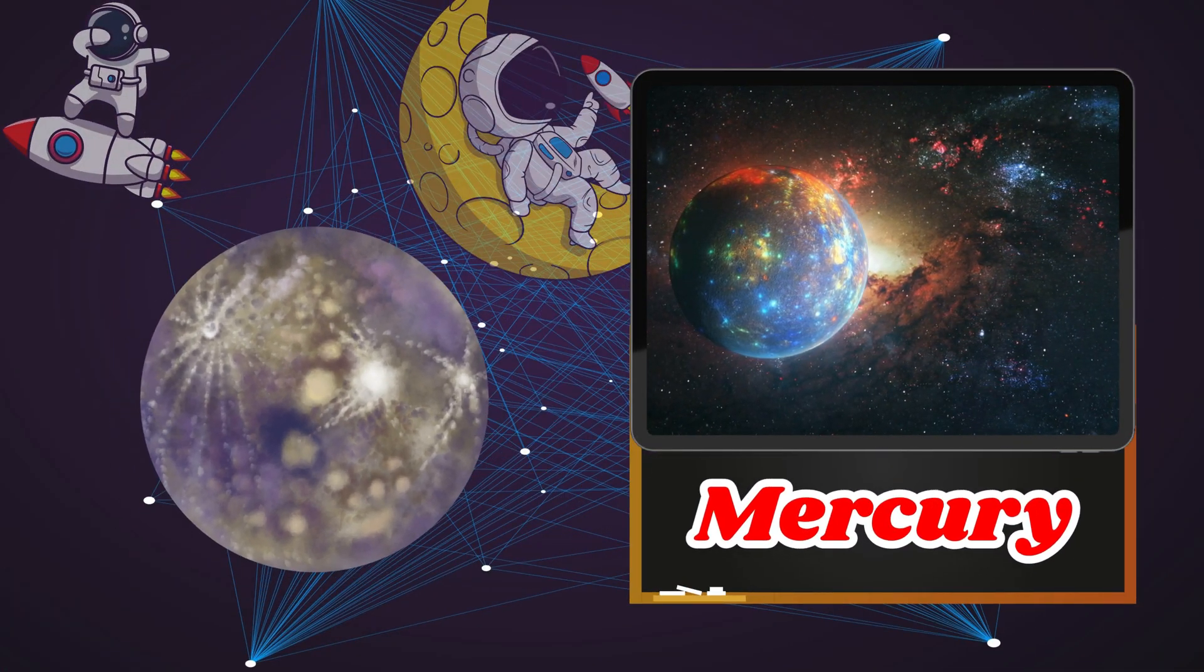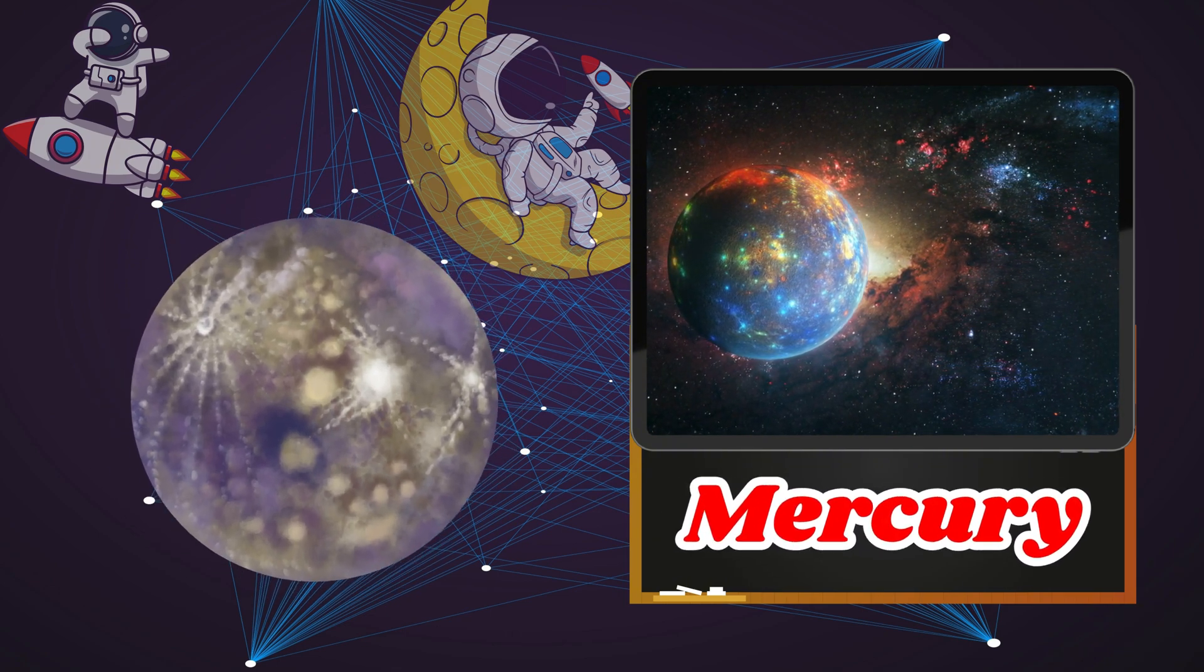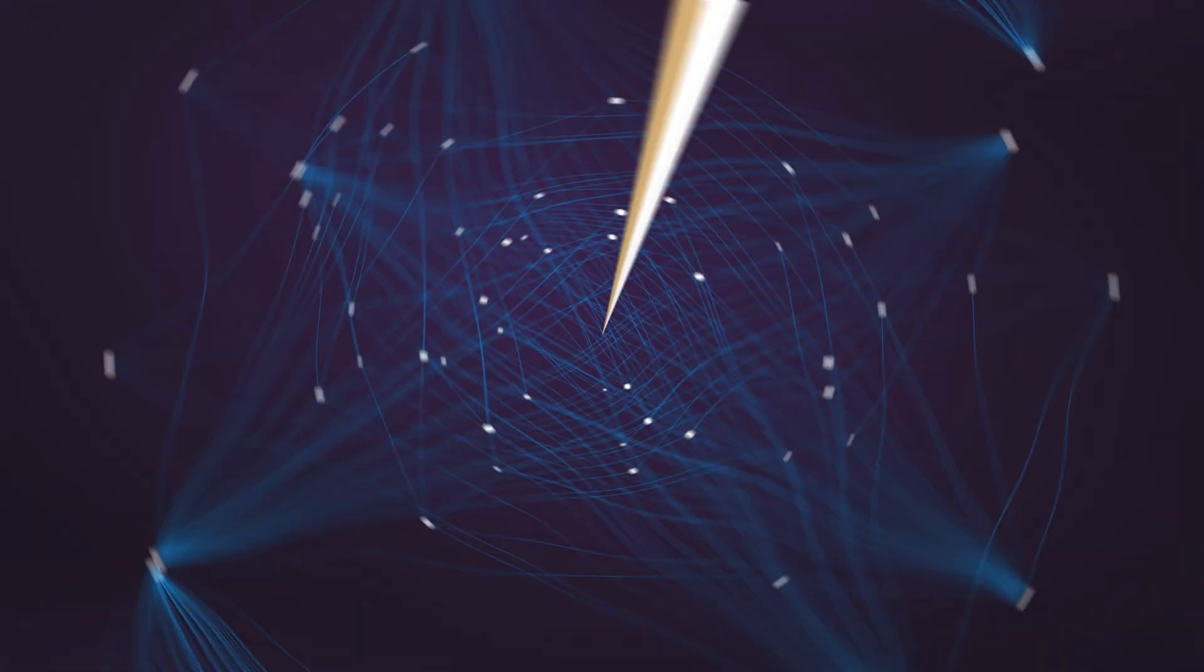Mercury is the smallest planet and the closest one to the Sun. It is very hot during the day and freezing cold at night.